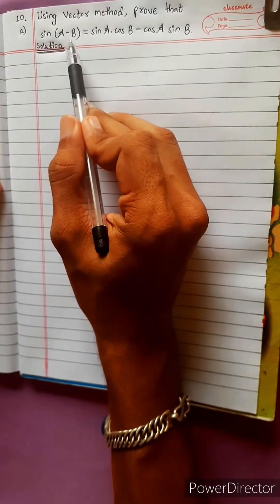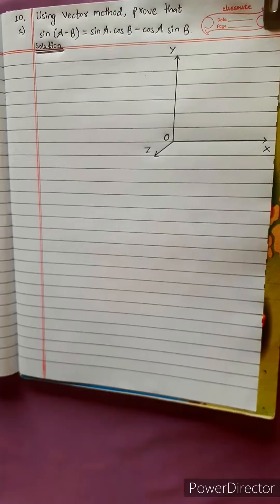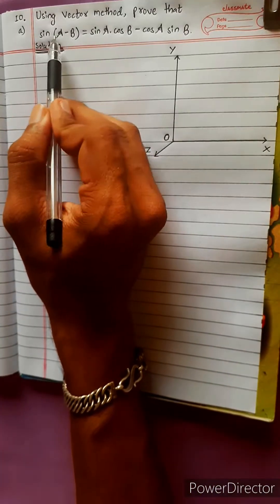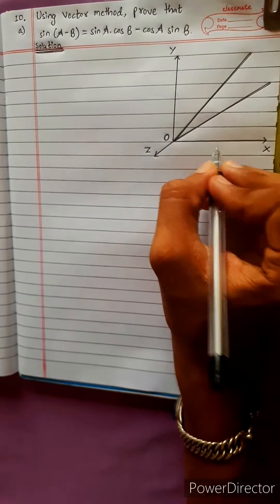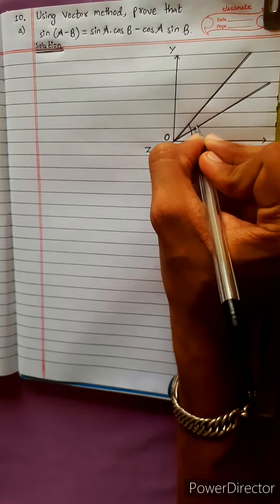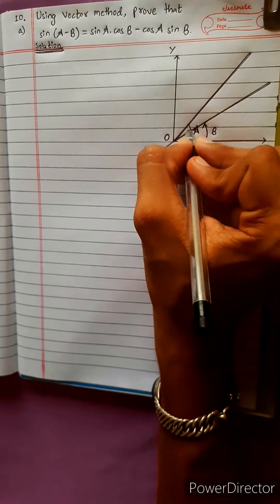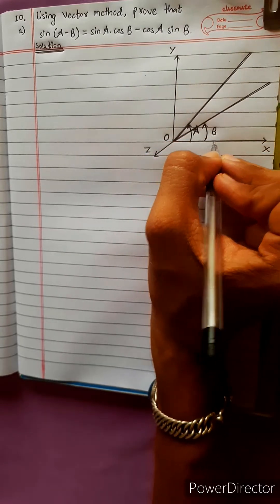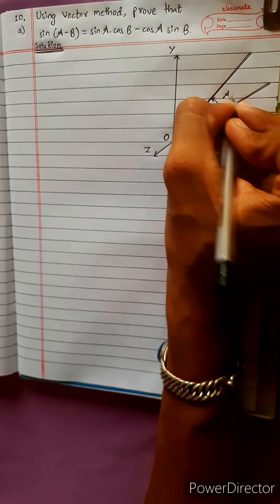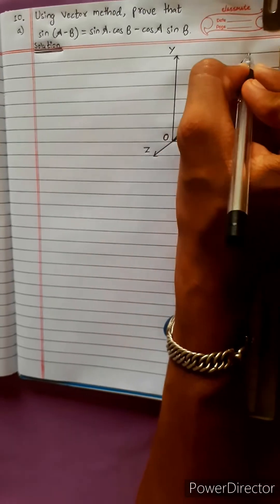Using vector method, prove that sin(A minus B) equals sinA cosB minus cosA sinB. This angle A minus B is set up for the proof. A-B is labeled at a point on the diagram.